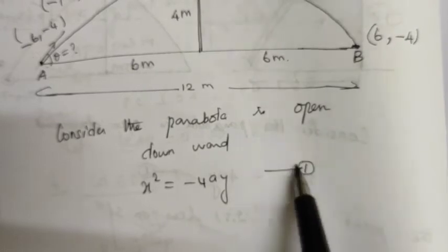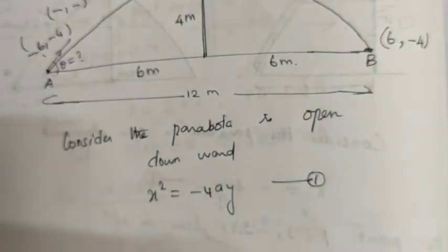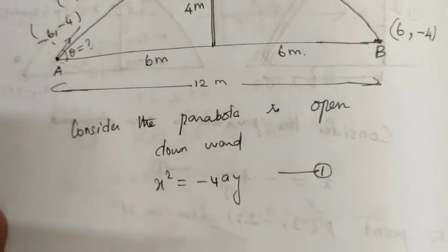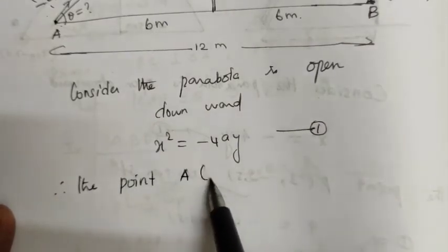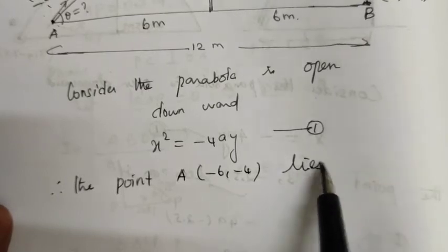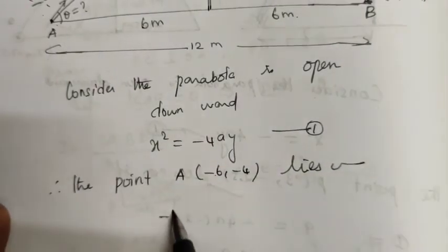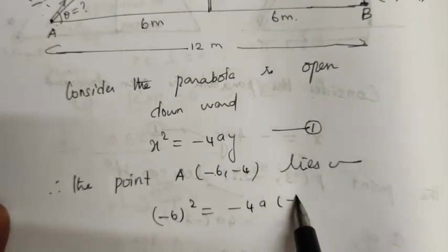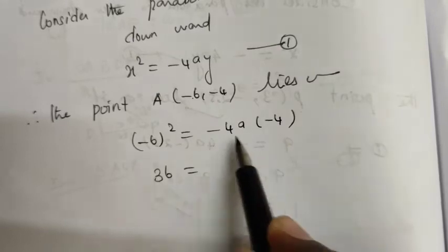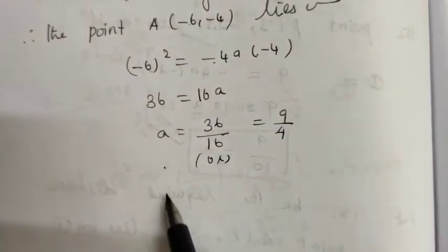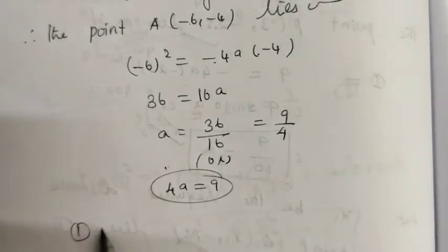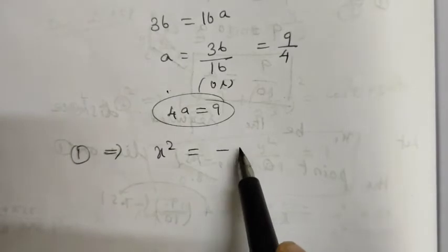Consider the parabola opens downward. We use the equation x² = −4ay. Therefore, the point (−6, −4) lies on the parabola. So (−6)² = −4a × (−4), giving us 36 = 16a. Therefore a = 36/16 = 9/4, which means 4ay = 9. The equation becomes x² = −9y.